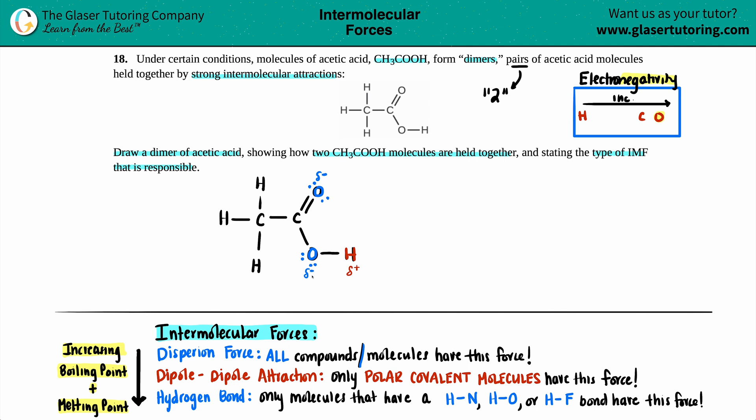But now we have to form this dimer. So we now have to bring in two, actually we have to bring in one more acetic acid molecule. And the way that these attractions are is that opposites attract. Negatives are going to be very attracted to positives of other molecules. And likewise, the positive is going to be very attracted to the negative of another molecule. So if I only have two acetic acids, what element would this oxygen be attracted to on the other acetic acid molecule?